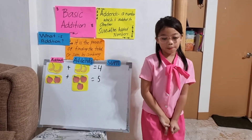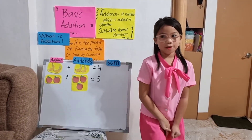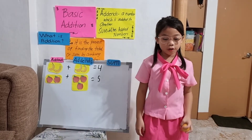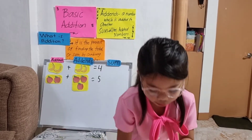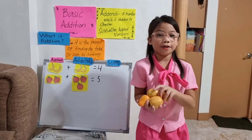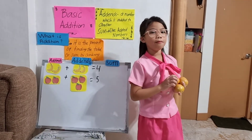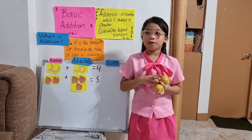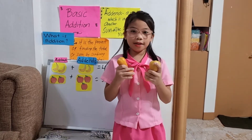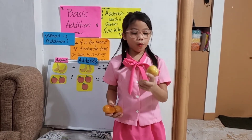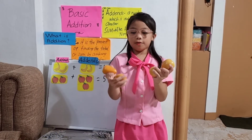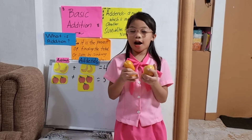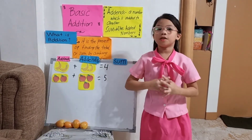Another example. I have here one tomato plus three tomatoes. How many tomatoes do we have? Let's count: one, two, three, four. We have four.